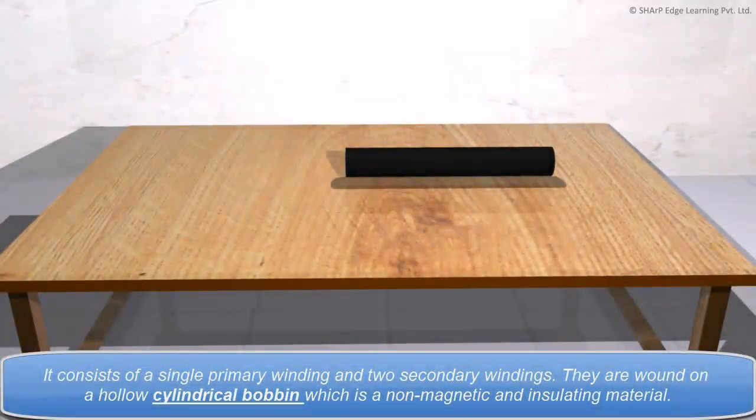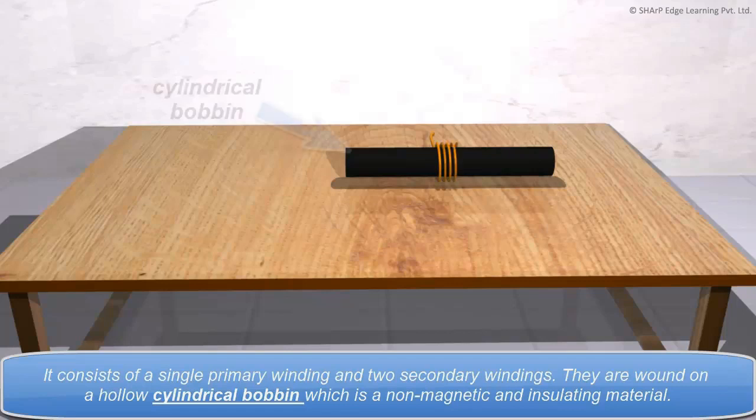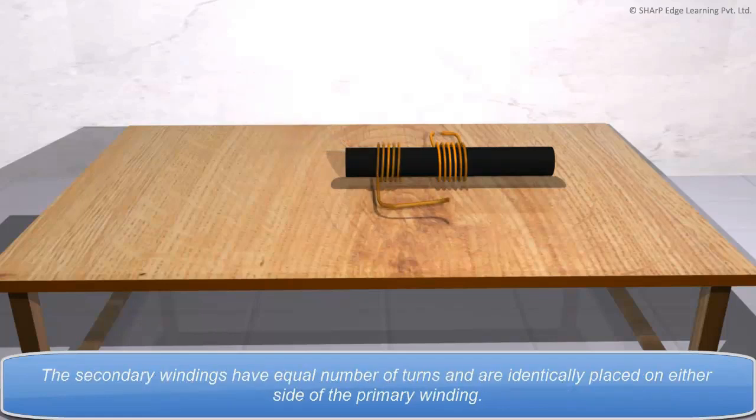It consists of a single primary winding and two secondary windings. They are wound on a hollow cylindrical bobbin which is a non-magnetic and insulating material. The secondary windings have equal number of turns and are identically placed on either side of the primary winding.